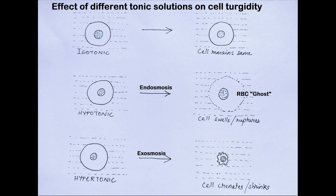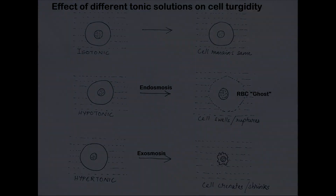And finally, if cells are placed in a hypertonic solution, the cells will shrink as there is a net movement of solvent from the cells to their external surroundings. This process is known as exosmosis.